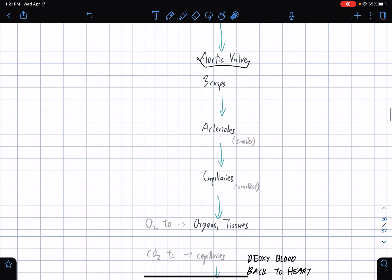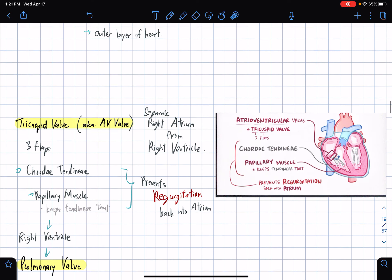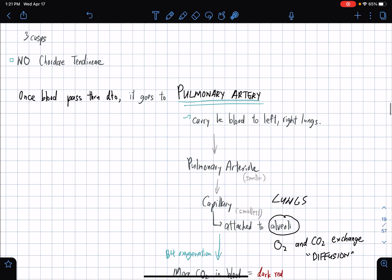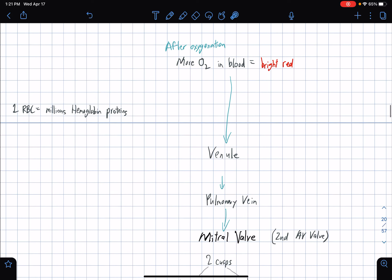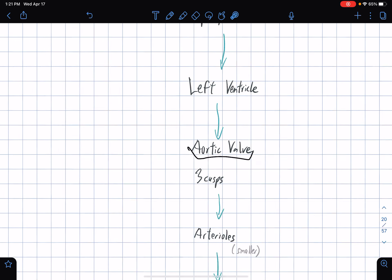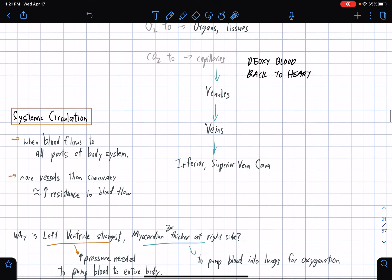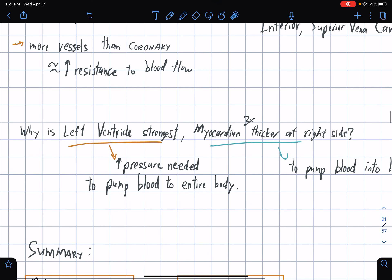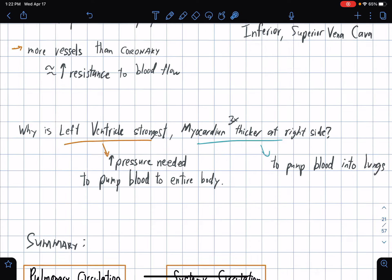Just to add to that, before the aortic valve we have the left ventricle. The left ventricle is the strongest because it holds the highest pressure. It's needed to pump the blood to the entire body.